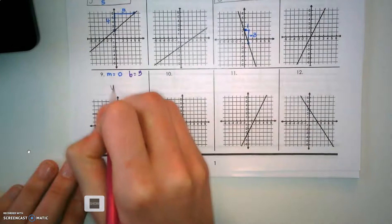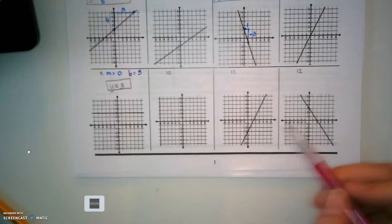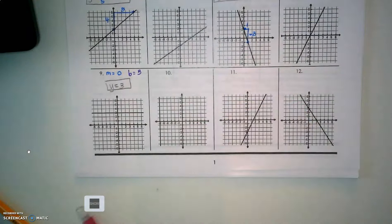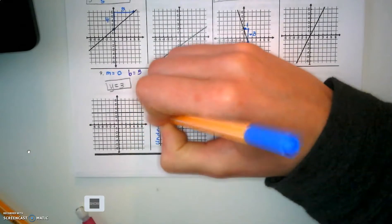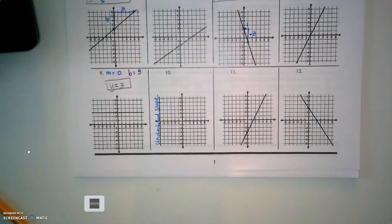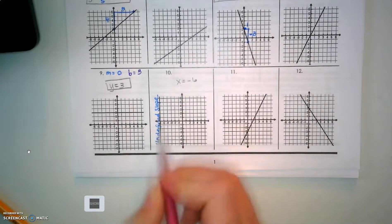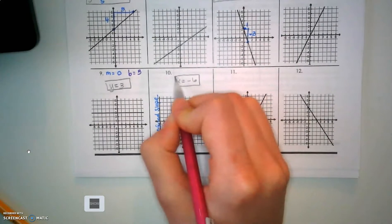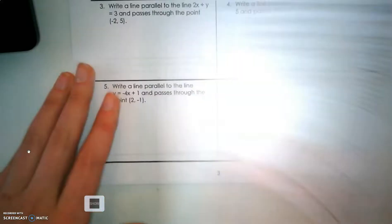Number 9: my line is horizontal, which is the graph from number 3 that we just wrote. My slope is 0 for a horizontal line and my y-intercept is at 3, so this is just y equals 3. I also want to talk about an undefined slope: anything vertical has an undefined slope. My equation won't have a y in it — it's going to be x equals negative 6, because it only crosses the x-axis at that one point.